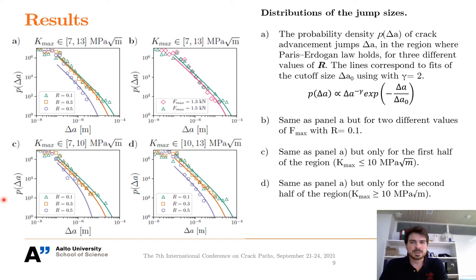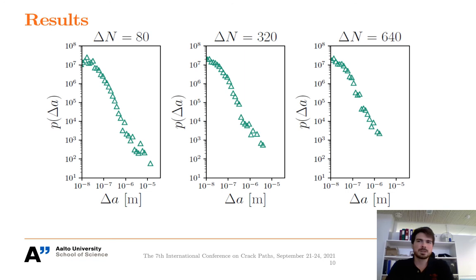As the crack growth exponent M differs between different values of R, the difference in the cutoff sizes should become more prominent as the stress intensity factor increases. So, we study this by splitting the Paris-Erdogan region in two. So, here you can see the full scale from 7 to 13, here is from 7 to 10, and here is from 10 to 13. We study this by splitting in half and looking at them separately. As expected, the cutoff size in the first half are smaller than the second half, and the difference between the cutoffs for different R increases in the second half.